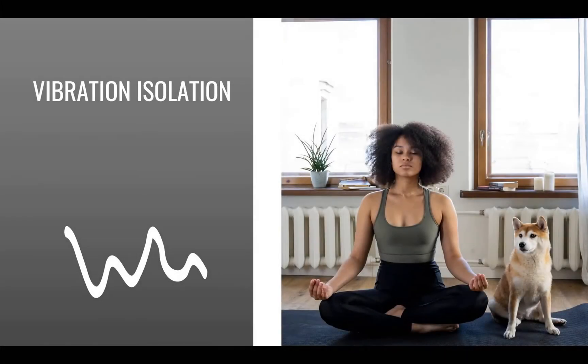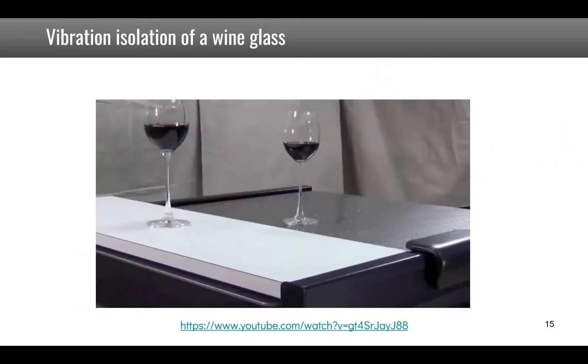Tuned vibration absorbers essentially dissipate the energy in the system. Another design and remedial measure consists in preventing the vibration source from reaching the object as much as possible. This is called vibration isolation.